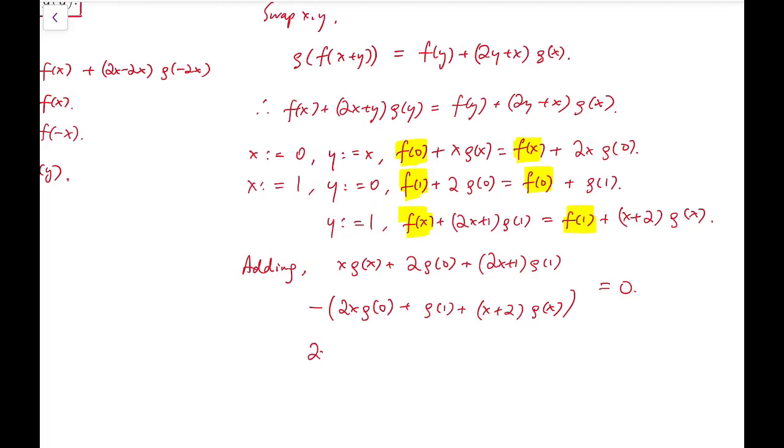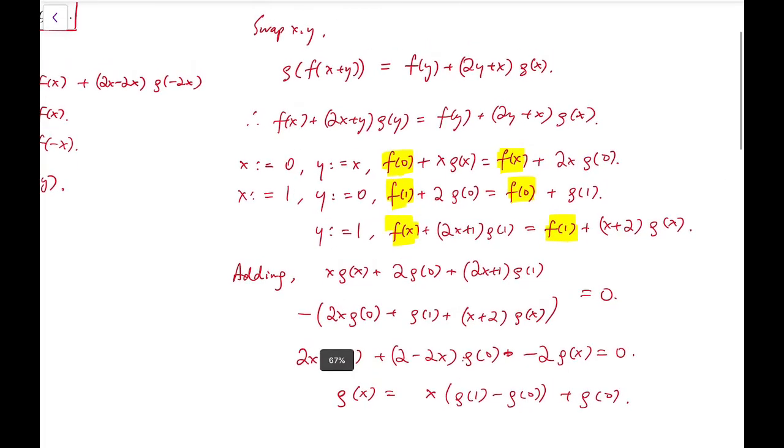Further simplifying, we have 2xg(1) + (2-2x)g(0) - 2g(x) = 0. So I can say g(x) = x(g(1)-g(0)) + g(0). At this stage, we know that g(x) must be a linear function, or it's a constant, and that depends on whether g(1) equals g(0).